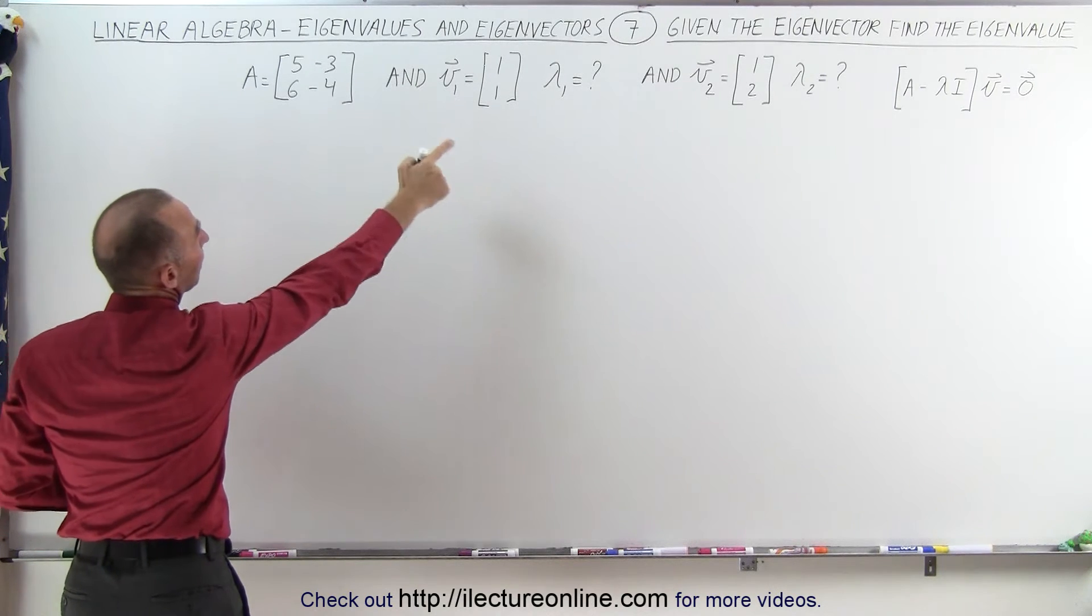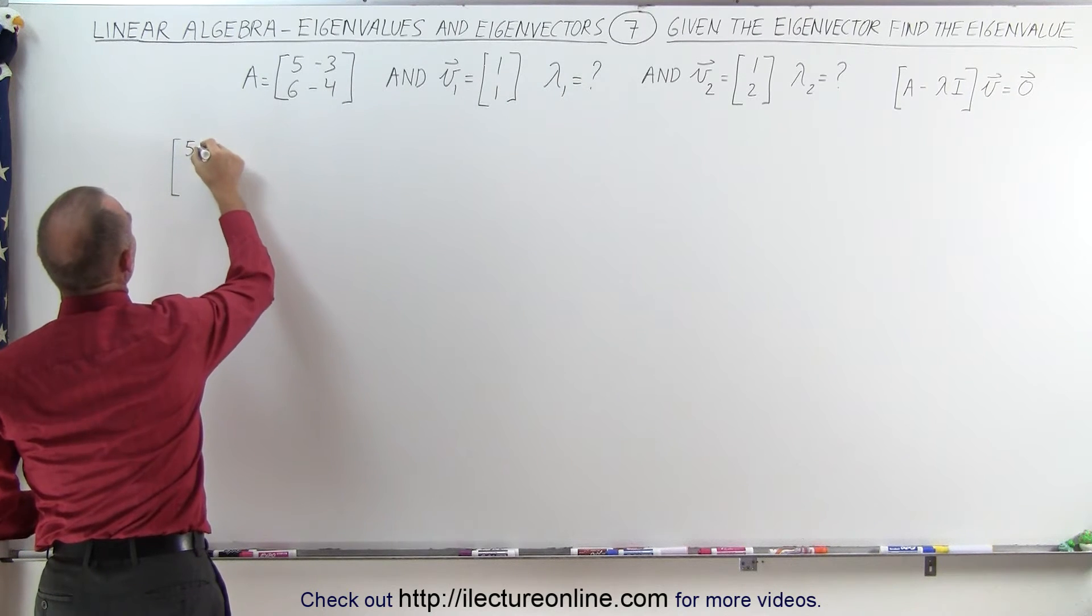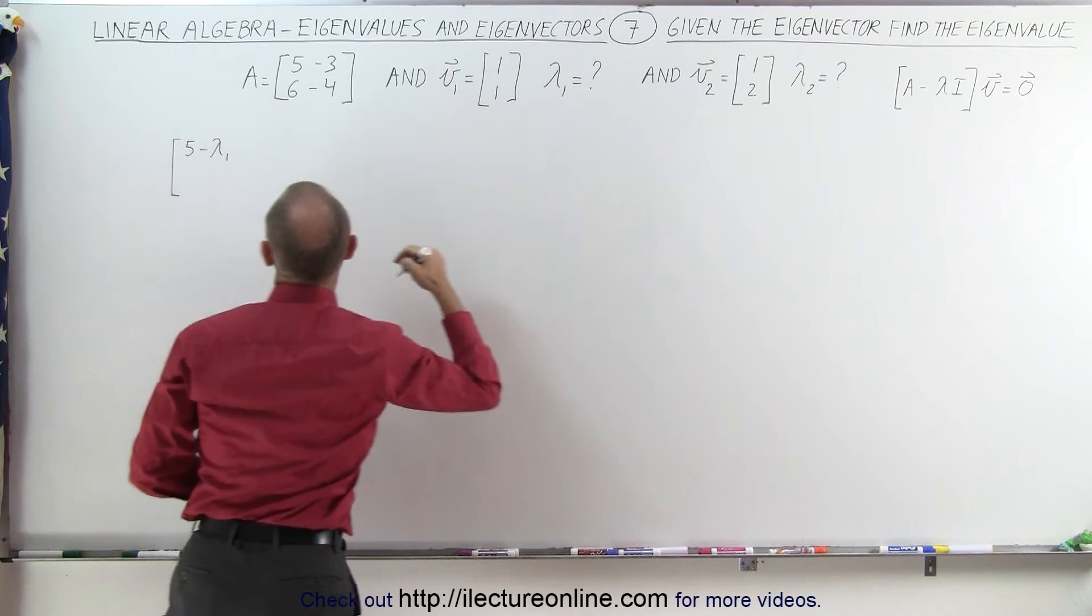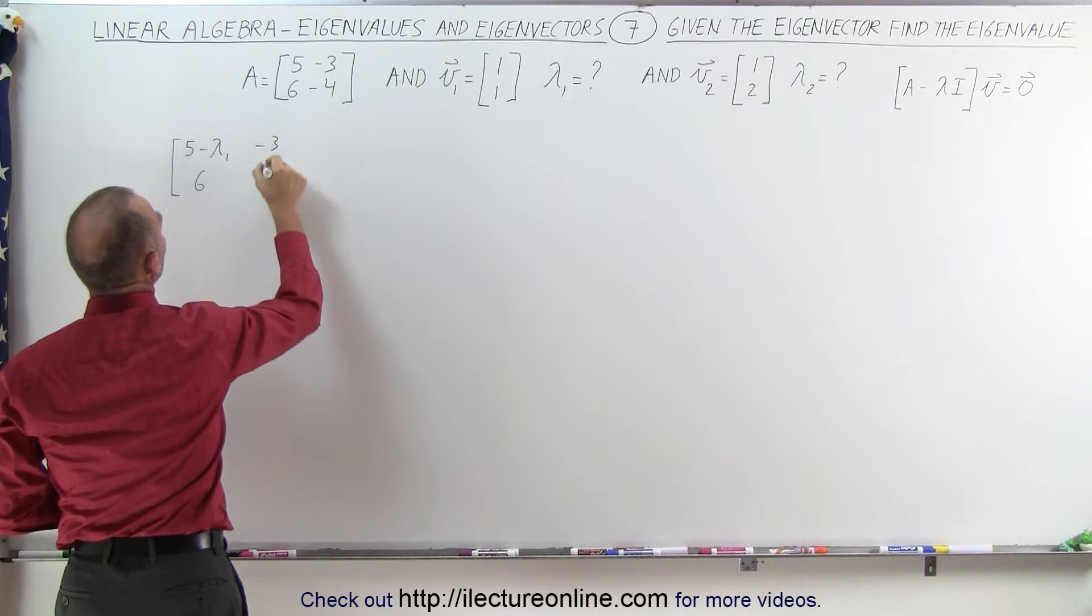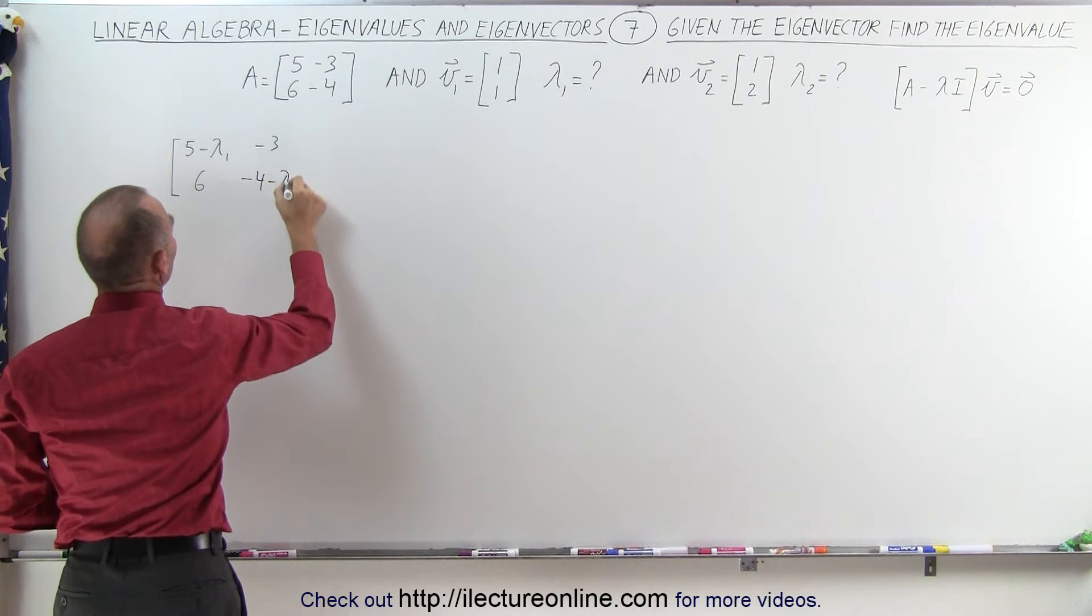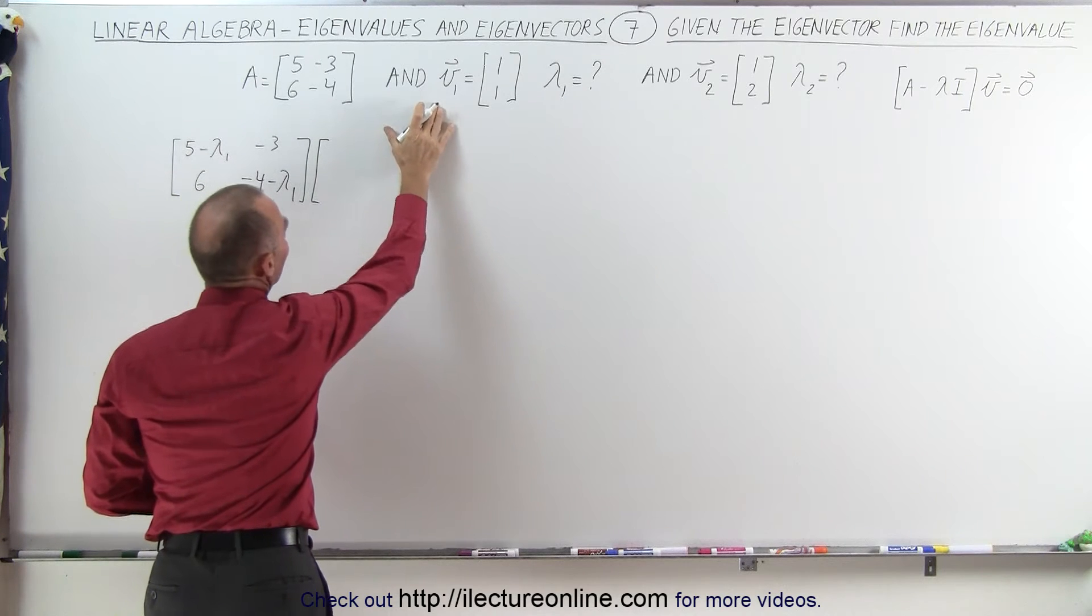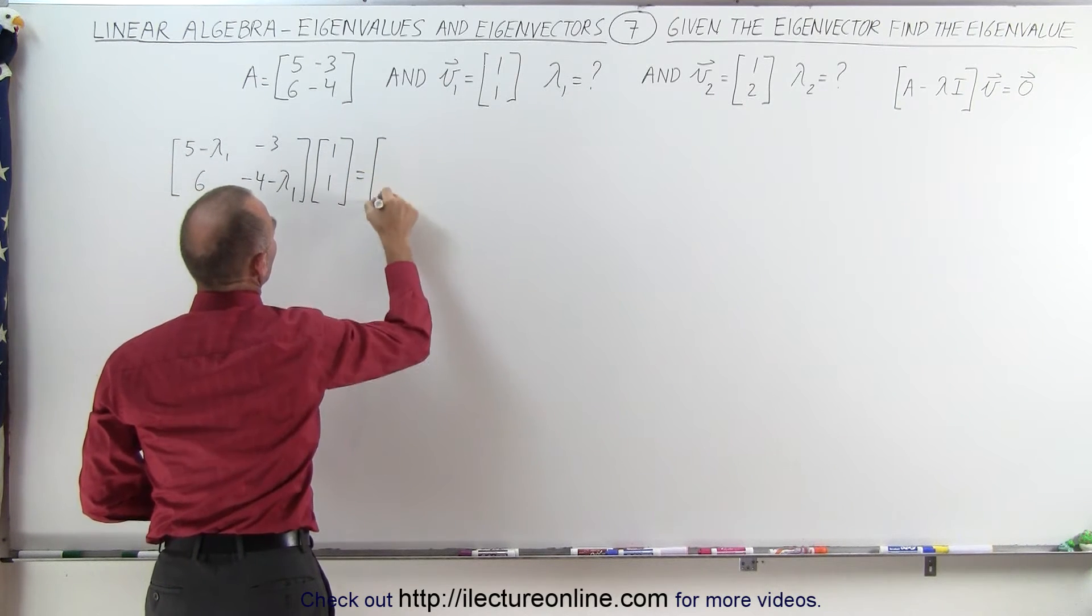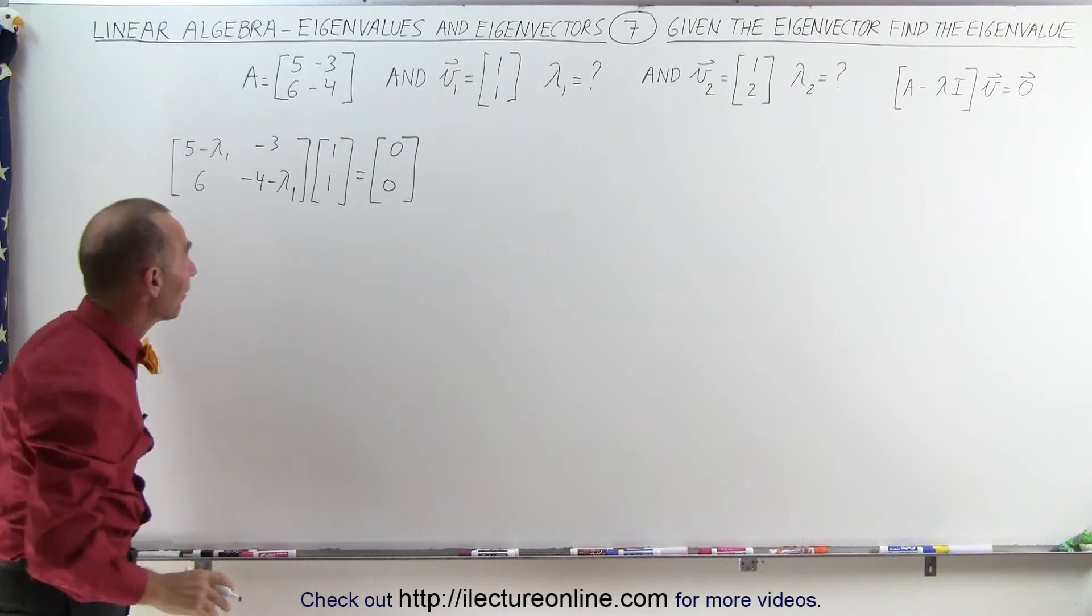In the case of our first vector, we have the matrix [5-λ₁, 6; -3, -4-λ₁] because we're going to find this eigenvalue λ₁. If we multiply that times the eigenvector v₁, which is [1, 1], we should get the null vector [0, 0], and this should allow us to find what that eigenvalue is.